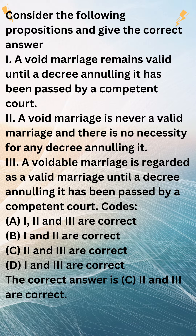Let's break down each proposition. 1. A void marriage remains valid until a decree annulling it has been passed by a competent court. This statement is incorrect. A void marriage is considered invalid from the beginning and it doesn't require a decree annulling it because it is inherently void.